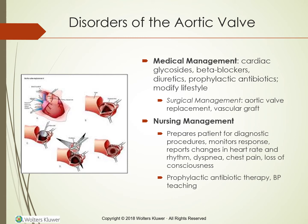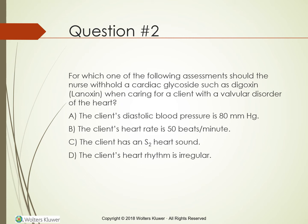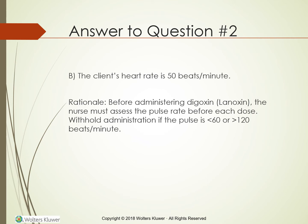Question: for which assessment should the nurse withhold a cardiac glycoside such as digoxin (Lanoxin) when caring for a client with a valve disorder? A) diastolic blood pressure is 80 mmHg, B) heart rate is 50 beats per minute, C) the client has an S2 heart sound, or D) the heart rhythm is irregular. The answer is B — heart rate of 50 beats per minute. Before administering digoxin, the nurse must assess the pulse rate before each dose and not give it if the pulse is less than 60 or greater than 120 beats per minute.